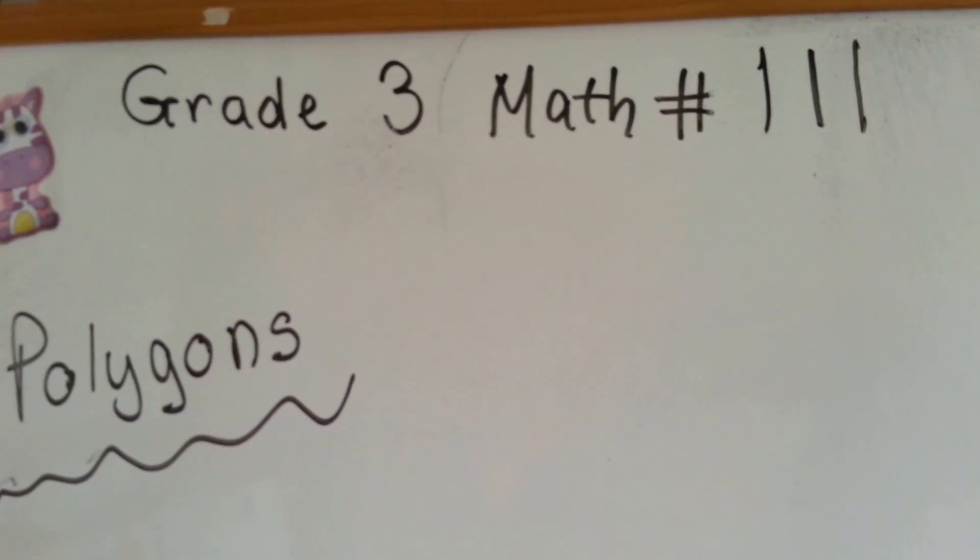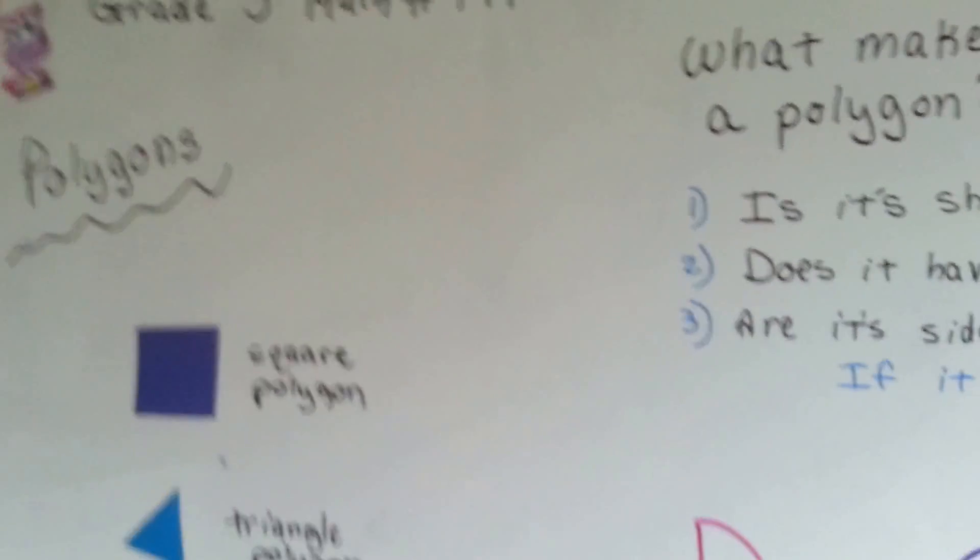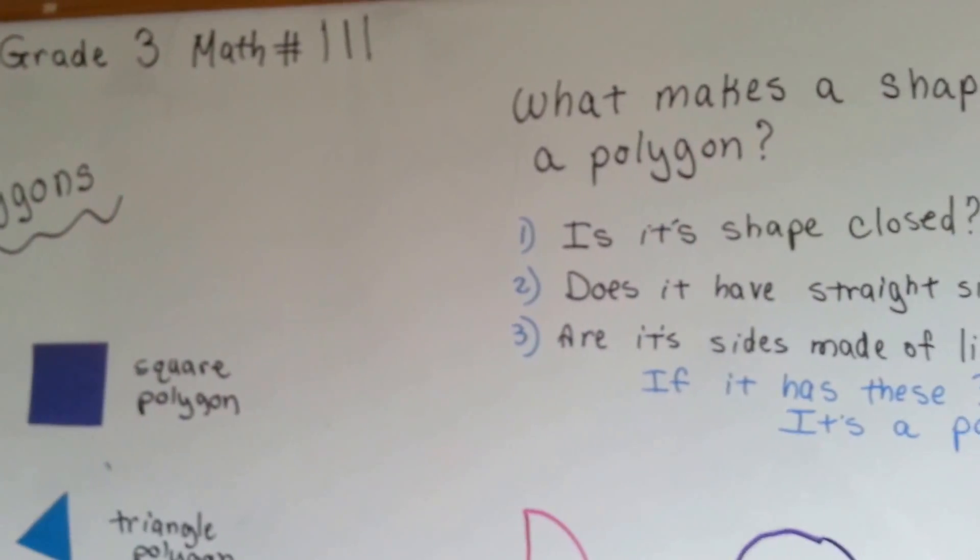Grade 3 math number 111, polygons. Alright, we discussed polygons a little bit in our previous video, and now we're going to see what makes something a polygon.